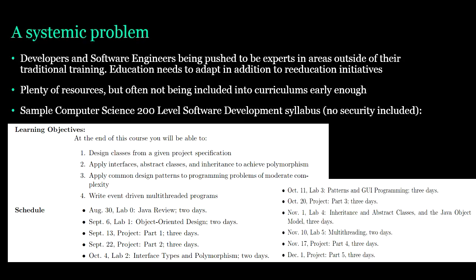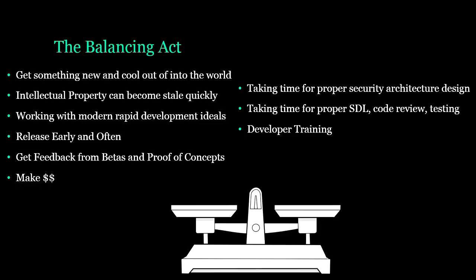It's really a systemic problem starting in how people get into this field. They go to school, study computer science, learn to program and design software — but a lot of times the security aspect isn't embedded into those programs. It needs to be incorporated early on. There's also a balancing act: intellectual property gets stale quickly, you need to get stuff out the door with rapid prototyping, and you've got to balance that against taking the time for secure architecture and developer training. Problems not fixed early end up costing more to fix later.